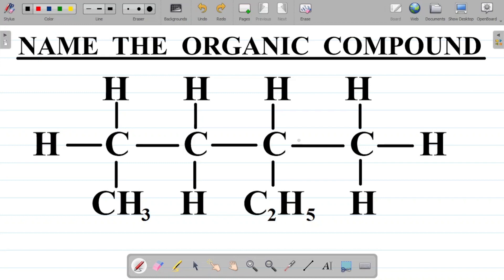The first rule in naming organic compounds is that you should identify the longest continuous carbon chain. To identify the longest continuous carbon chain, you have to be able to draw out the given structure in full.